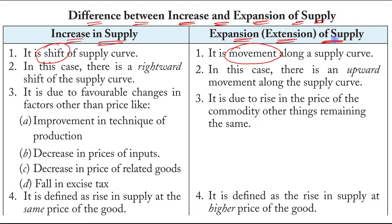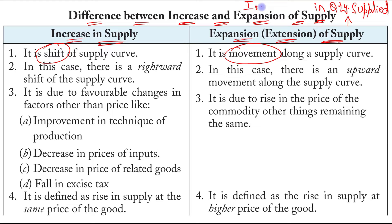Expansion of supply falls under the heading of increase in quantity supplied. So on one side we have increase in supply, and on the other side we have increase in quantity supplied, which is the movement case. In the case of increase in supply, there is a rightward shift of the supply curve.